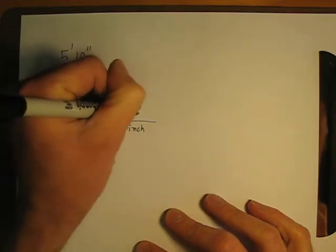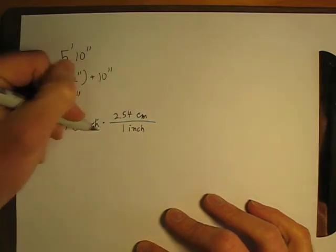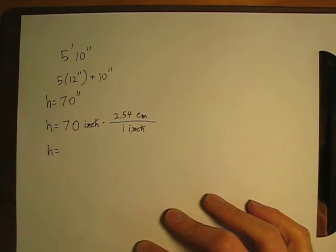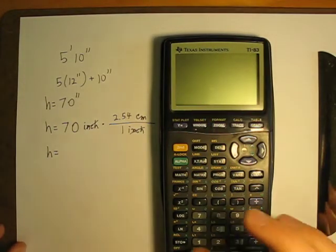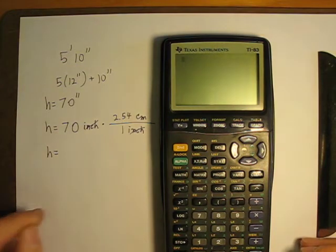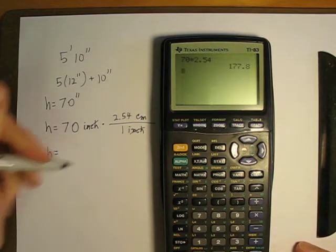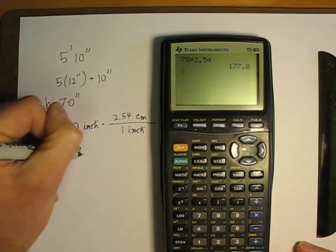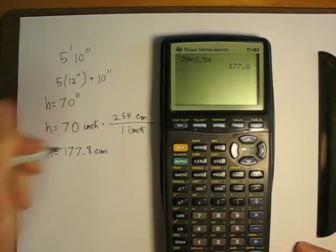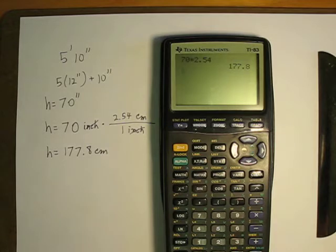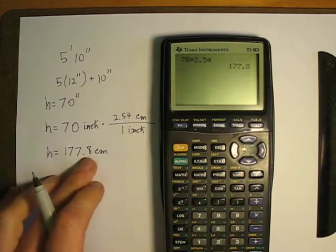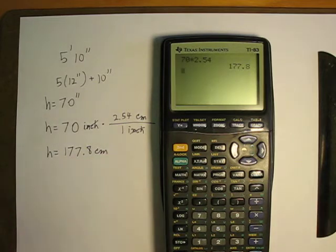Now, my inches cancel out, and I throw in my calculator here, and I find that it is 70 times 2.54. I am 177.8 centimeters. But, we're going to have to talk more about significant digits here in a second. But, I'm not 177.8 centimeters. That's down to a very fine precision.